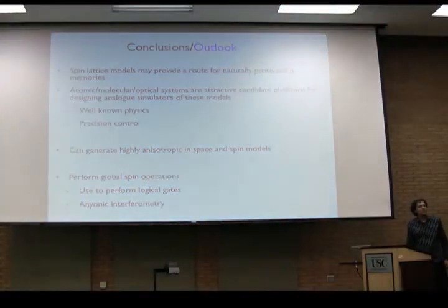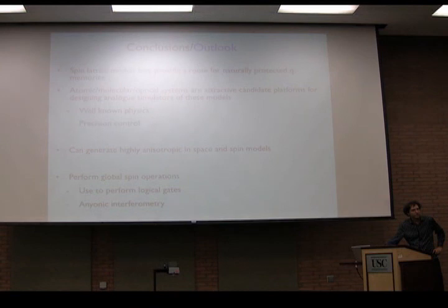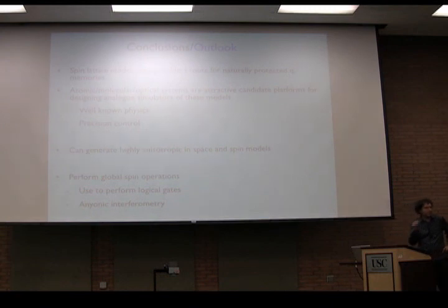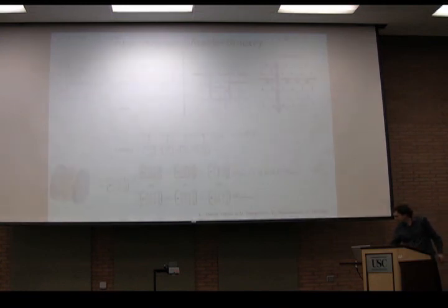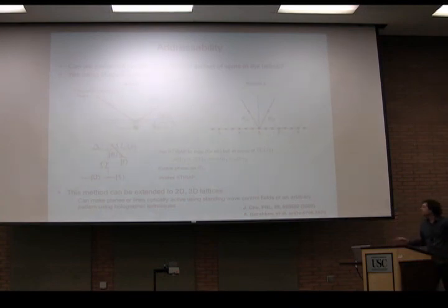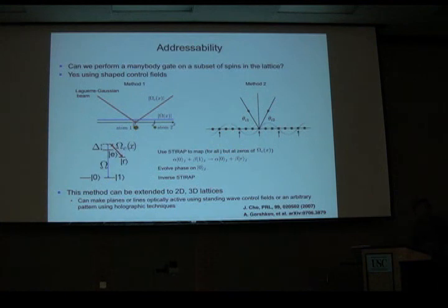Q&A: A questioner asked about dipole-dipole interactions when creating dark spots — whether the radiation hitting dark spots couples to nearest neighbors. The speaker clarified that you would turn off your interactions, then do the mapping using STIRAP, then do global operations, then turn them back on. Generically there will still be interactions if you don't do that. The questioner then asked about the scale of U in the experiment — around seven kilohertz — and the speaker noted the diagram was done for a lattice spacing of 200 nanometers, which is experimentally feasible for calcium chloride on an optical transition, though experiments haven't yet succeeded in trapping single molecules.